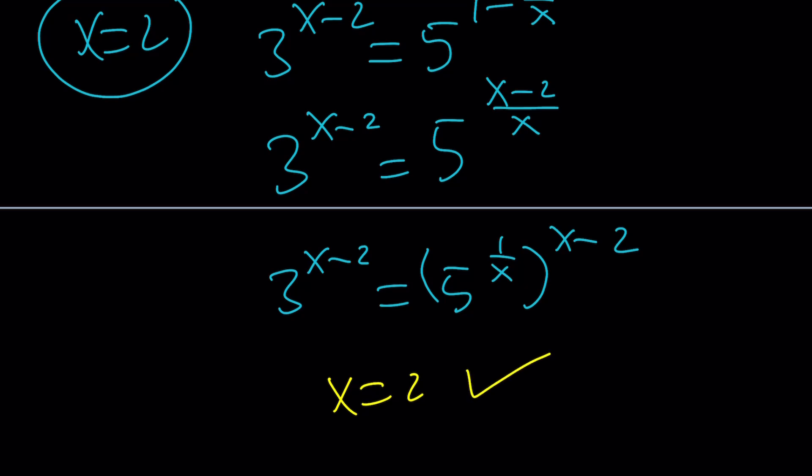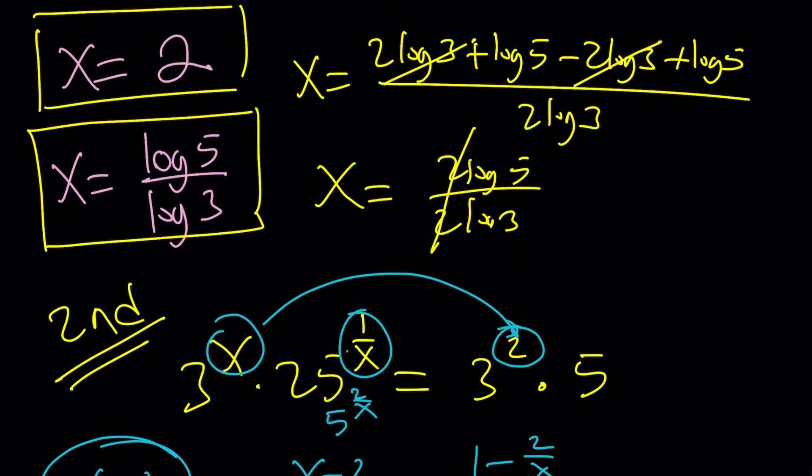Check, check. But what if I get rid of these, then I get the other solution? Because if you log both sides or if you raise both sides to the power of x, you're going to get the other solution, which is log 5 over log 3. Did I get that right? I think so.